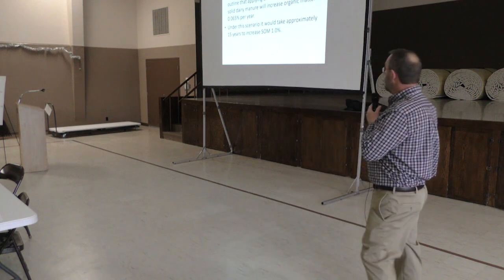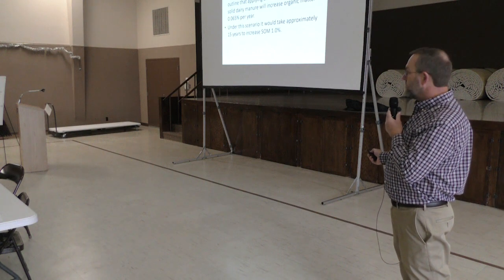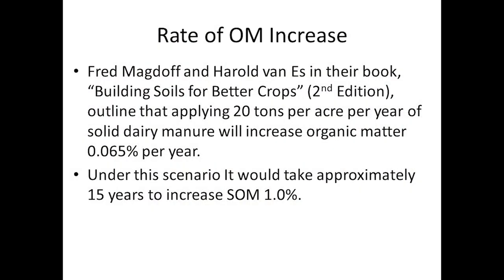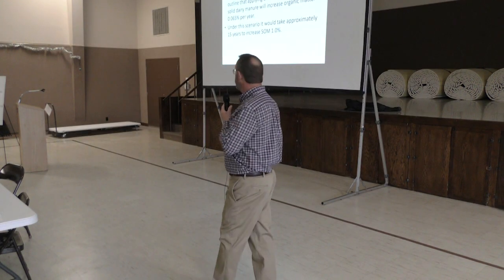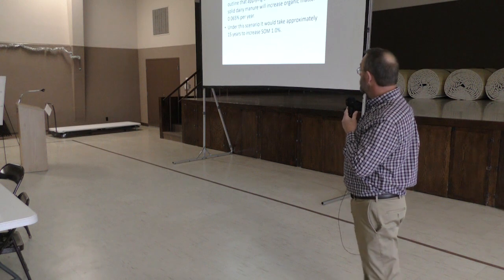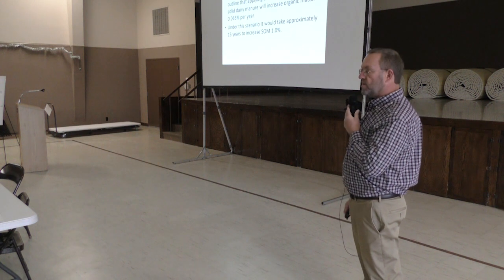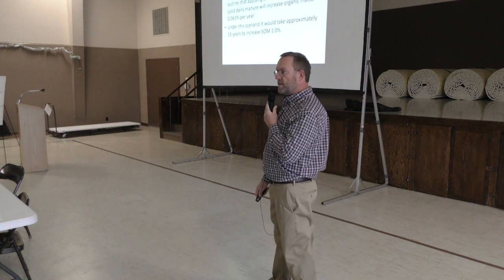Fred Magduff and Harold Van Asten in their book 'Building Soils for Better Crops' outlined research showing that about 20 tons per acre per year of solid dairy manure will increase your organic matter level 0.65% per year. Under that scenario, it would take approximately 15 years to raise your soil organic matter 1%. It's a free PDF you can download from SARE.